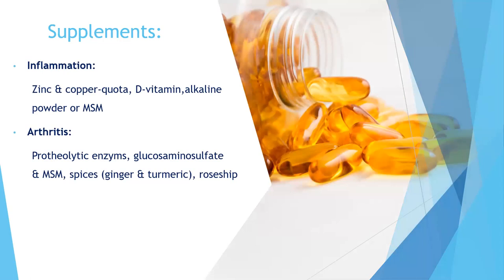Supplements you could take to prevent inflammation, also in a preventative way: zinc and copper — more zinc than copper, but you need both in balance. Vitamin D as mentioned. If you're not really following the dietary advice, you can buy alkaline powder or MSM, which make your body more alkaline. If you have arthritis, you can also buy glucosamine sulfate or MSM, which slow down the process where cartilage gets broken down. Spices like ginger and turmeric are anti-inflammatory. Rosehip works for some people, not others — you have to try.